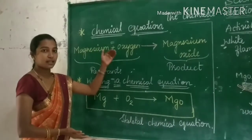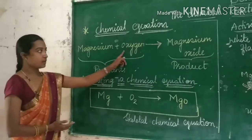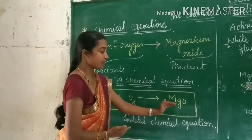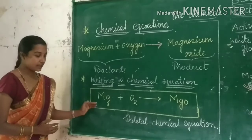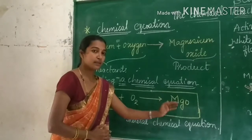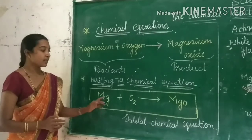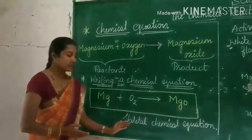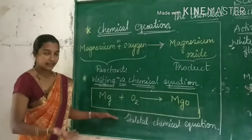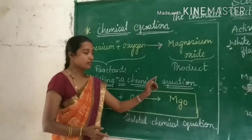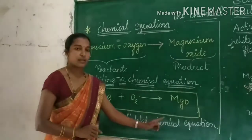The word equation is more concise and useful when we use chemical formulas. Magnesium is written as Mg, oxygen is written as O₂, and the product magnesium oxide is written as MgO. Now observe this equation — we count the number of atoms of the reactant elements, and they must equal the number of atoms of the product elements. If they are equal, the equation is said to be balanced. But sometimes if they are not equal, such equations are called the skeletal form of a chemical equation.